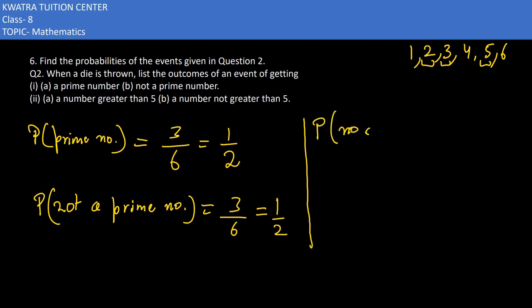In the second case, we have a number greater than 5. Which number is greater than 5? If it is greater than 5, there is just one number, which is 6. So what is our probability? 1/6.